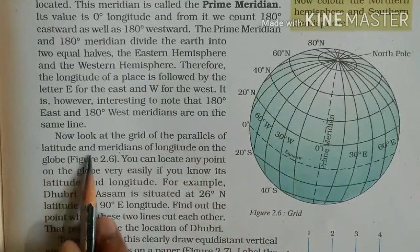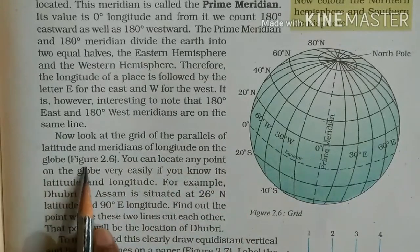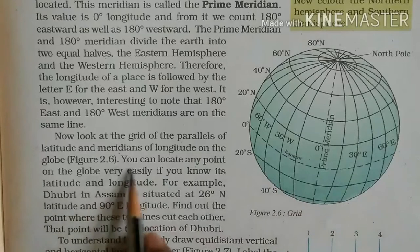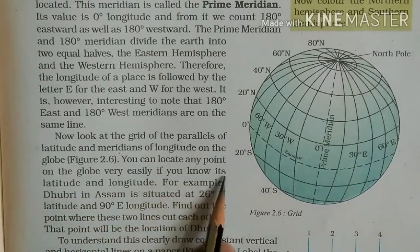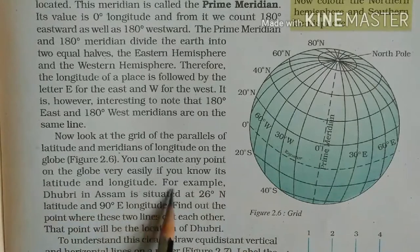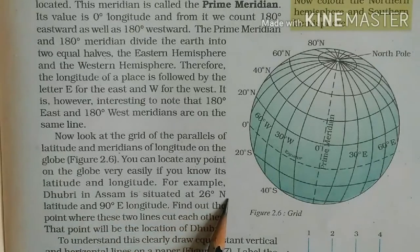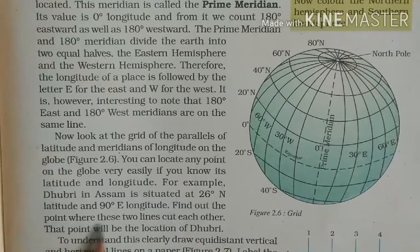Now look at the grid of the parallels of latitudes and meridians of longitudes on the globe. You can locate any point on the globe very easily if you know its latitude and longitude. For example, Dhubri in Assam is situated at 26 degrees North latitude and 90 degrees East longitude.